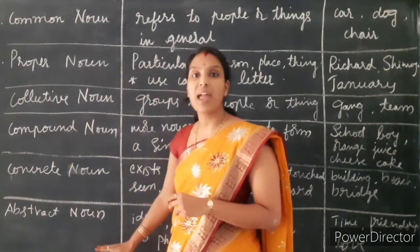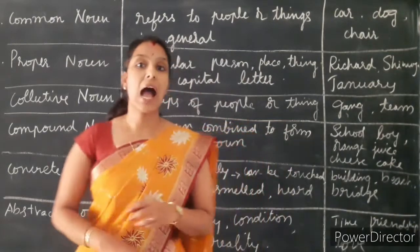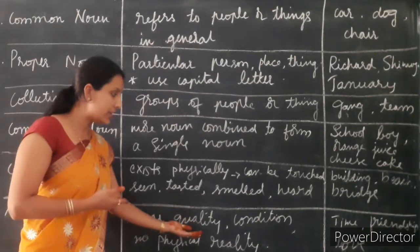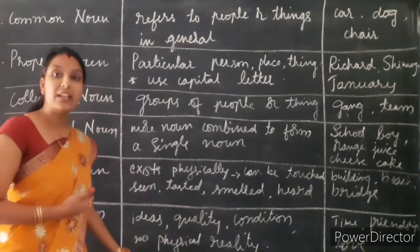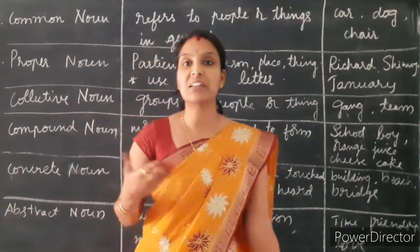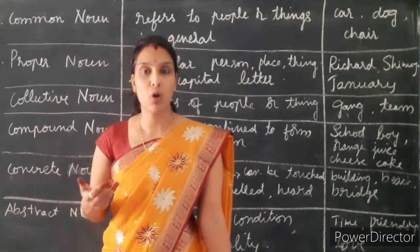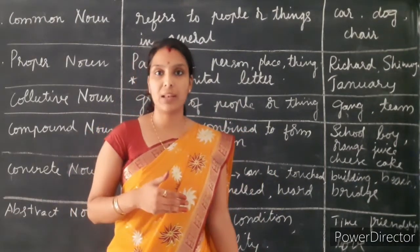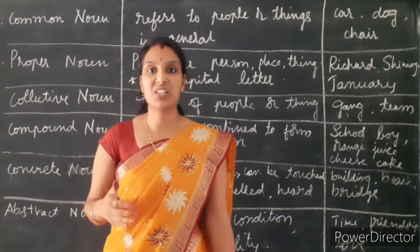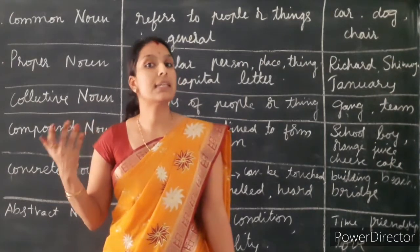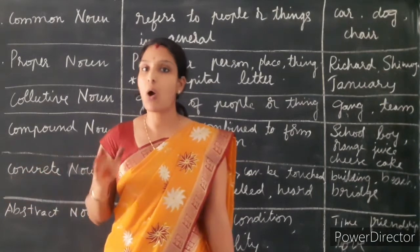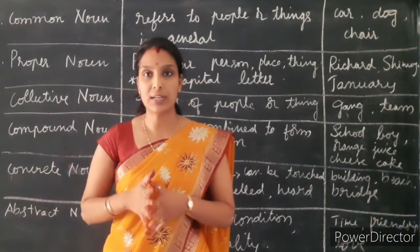The last one is abstract noun. Abstract nouns are those nouns which are called as ideas, quality, or condition, and they do not have any physical existence or physical reality. For example, love, friendship, time — these can be just felt or sensed but do not have any physical reality or physical presence.